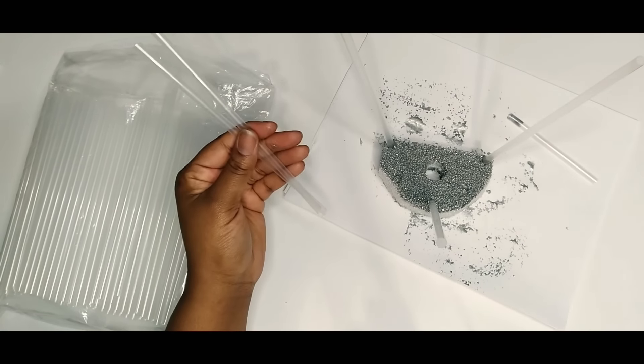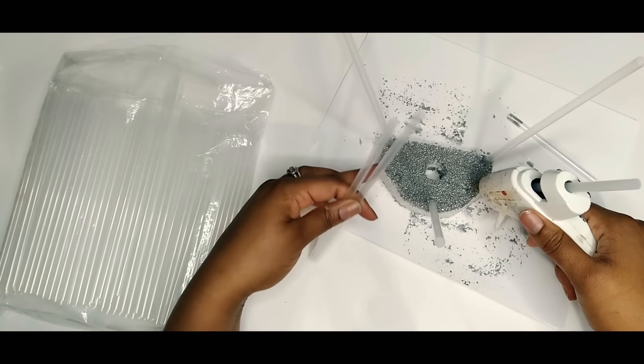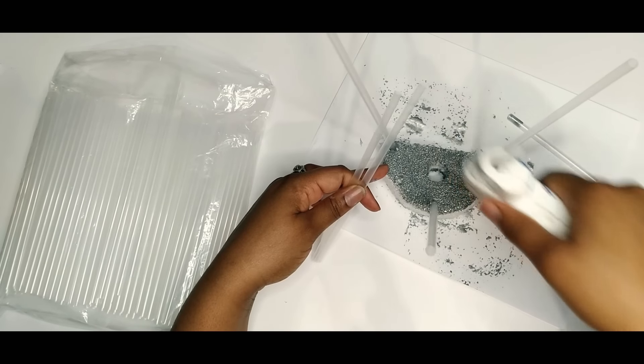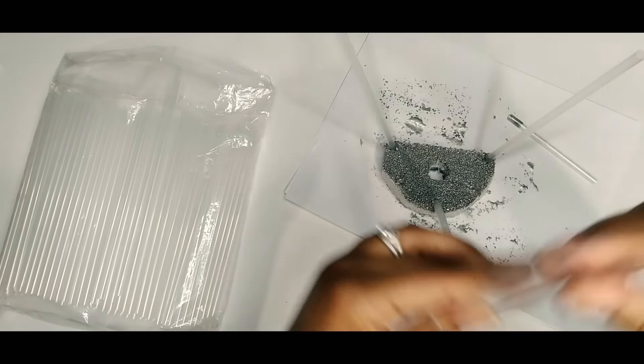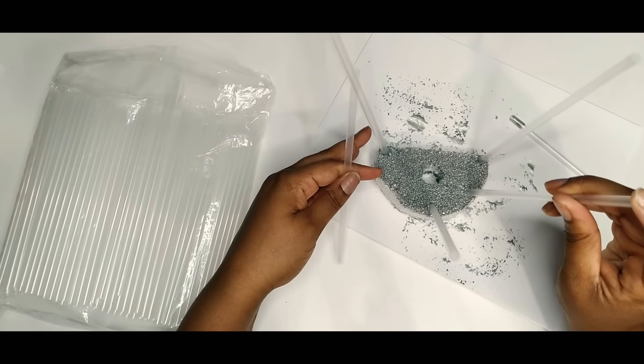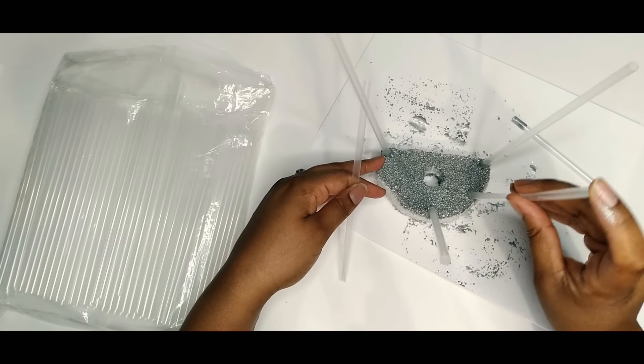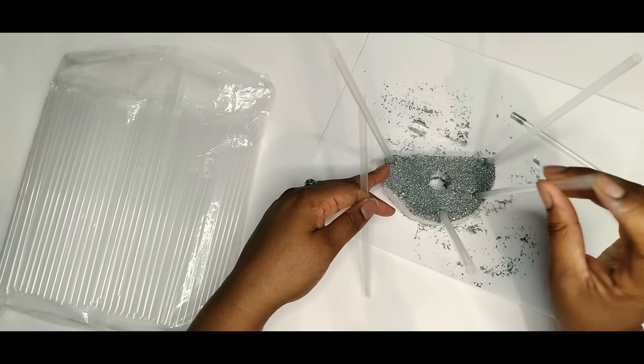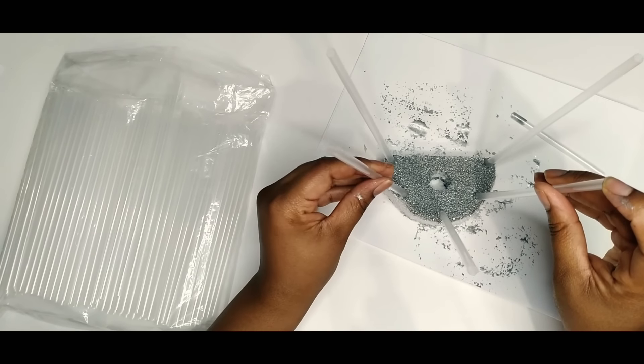Once I have my three starter straws all glued down, I'm going in with two more straws and gluing right in between those three, trying to get them as even as possible, making sure to keep them at an angle. Once I'm satisfied with their placements, I'll just hold them and allow the glue to dry.